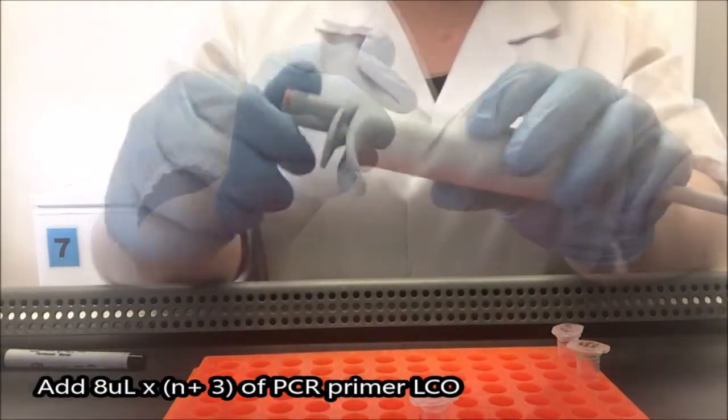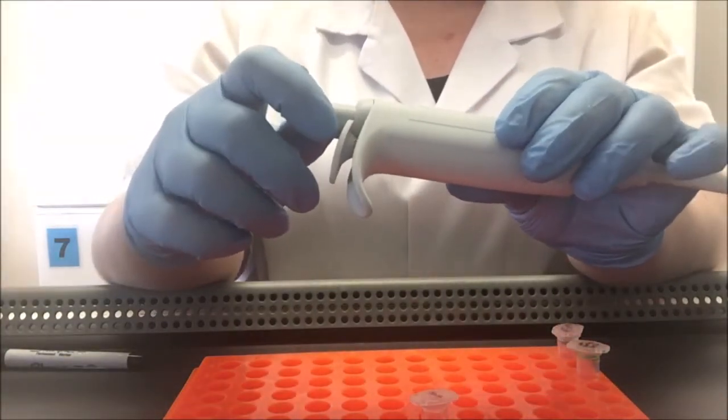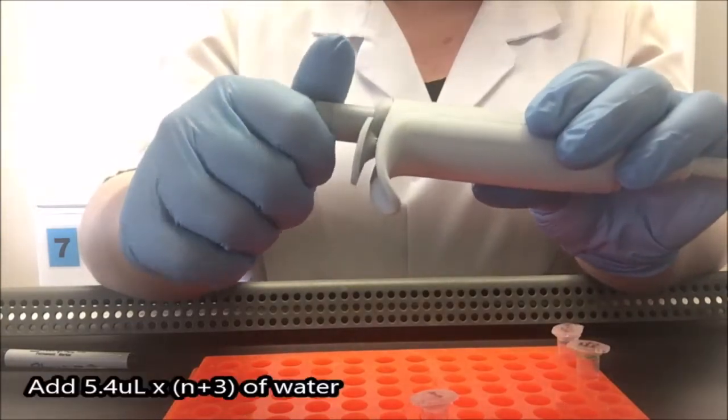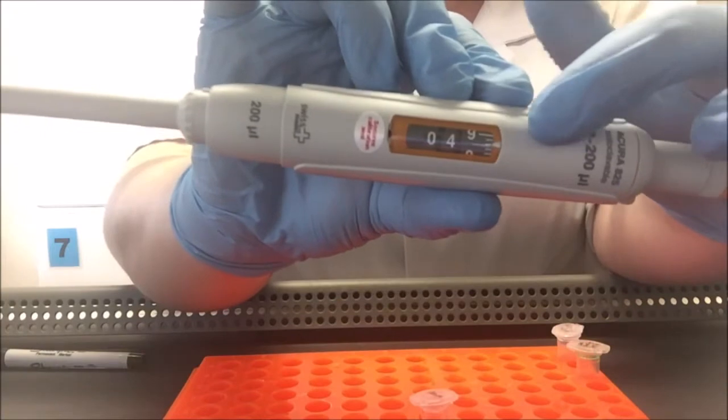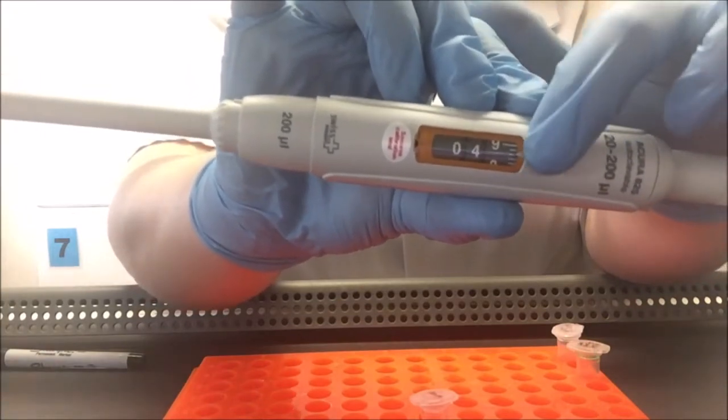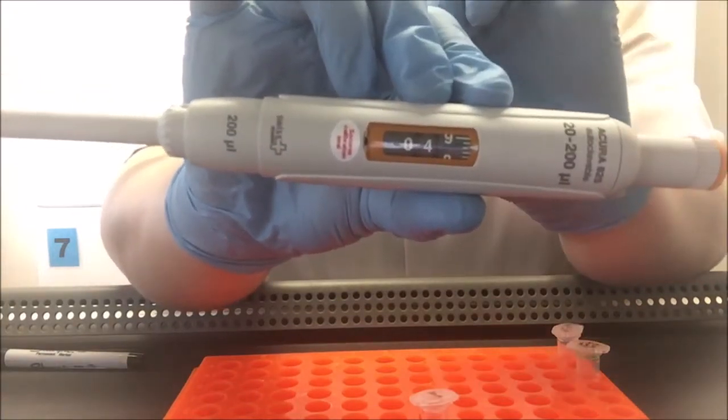Next, I'm going to add my water, 48.6 microliters of water. So that's 5.4 microliters per sample. So here, to get the decimal, I've had to use the little lines that you see here. It works much the same way as a ruler.